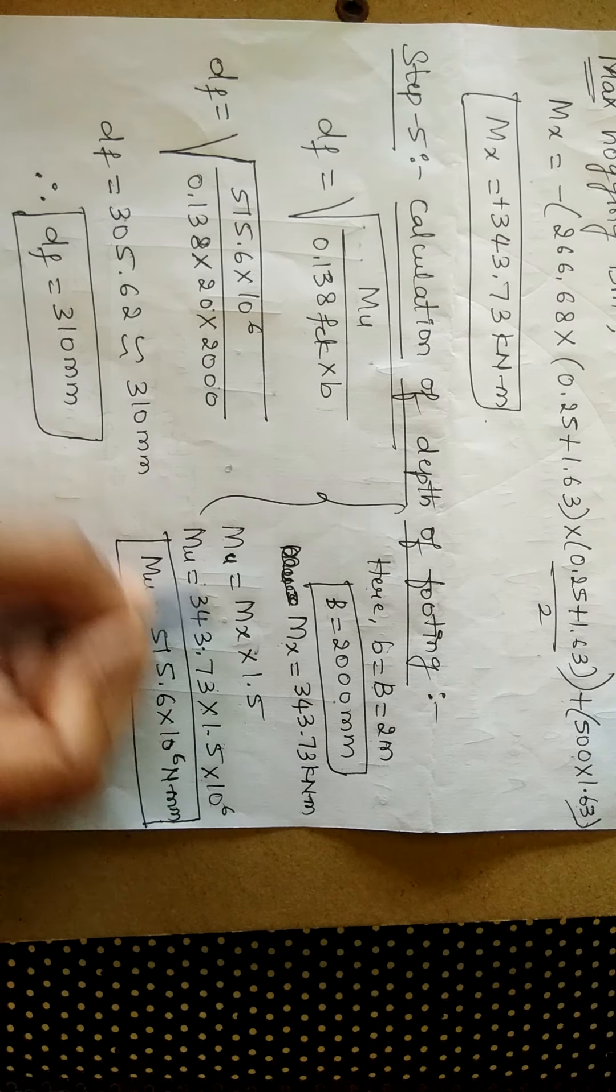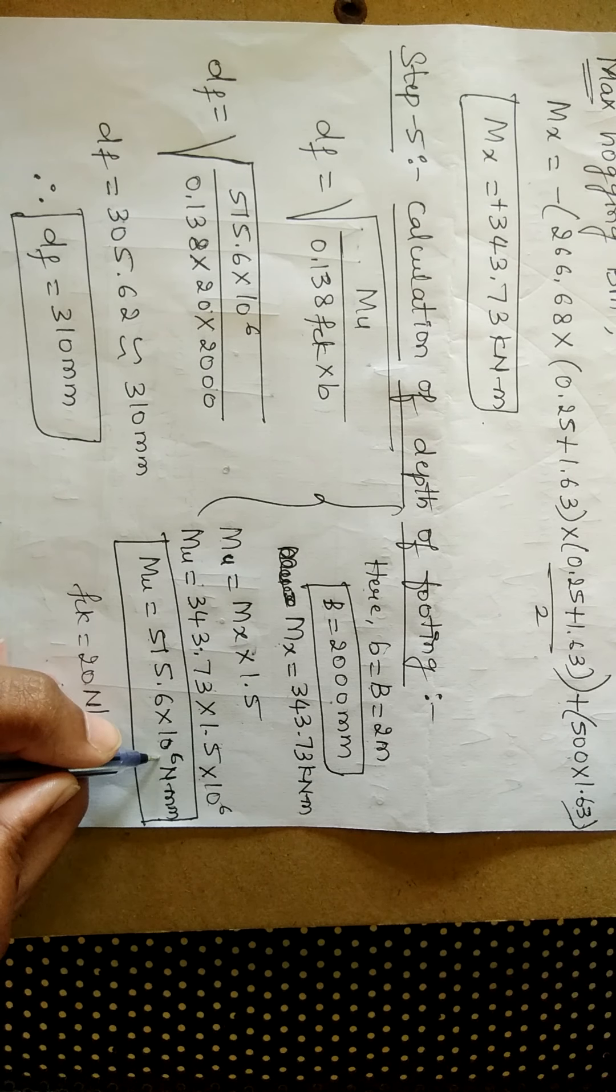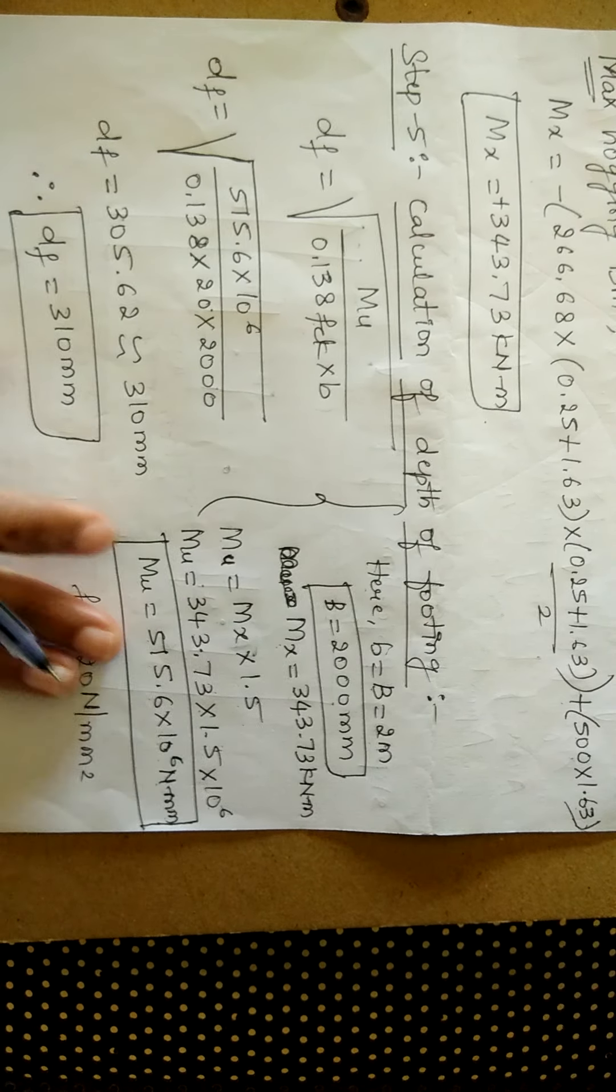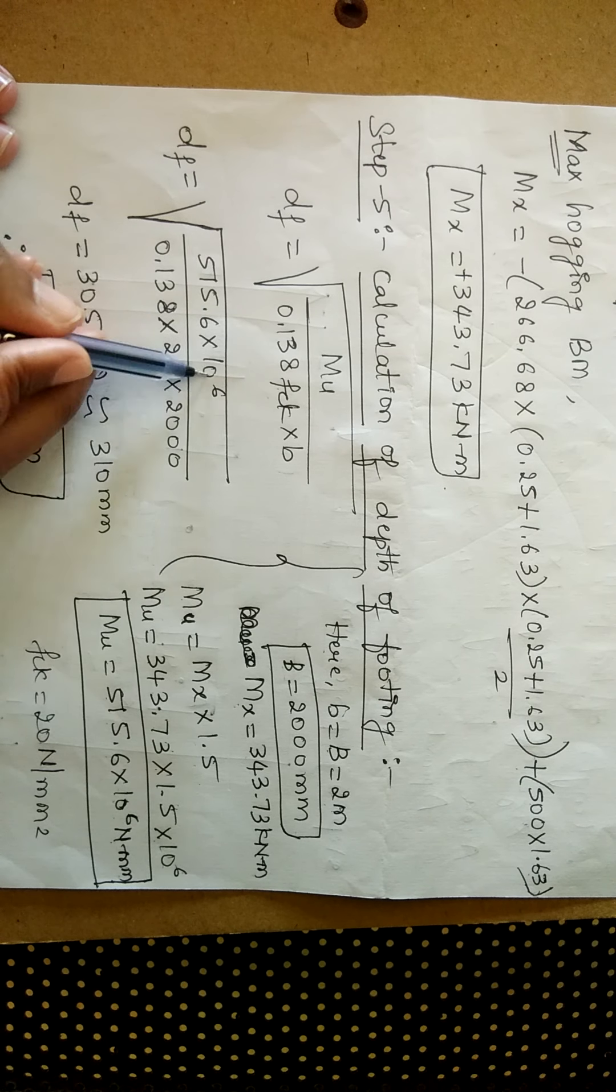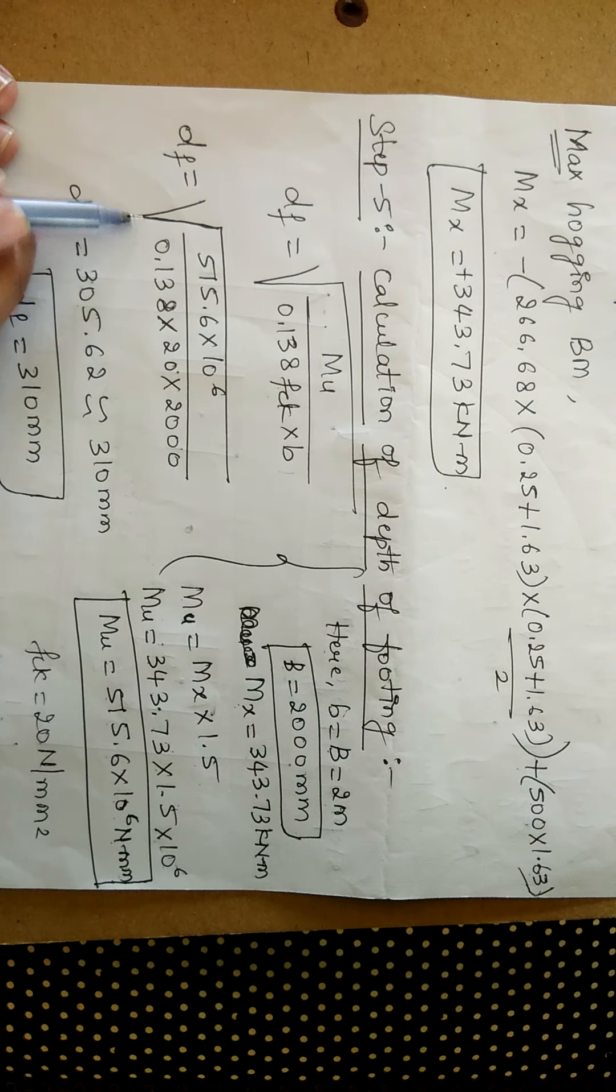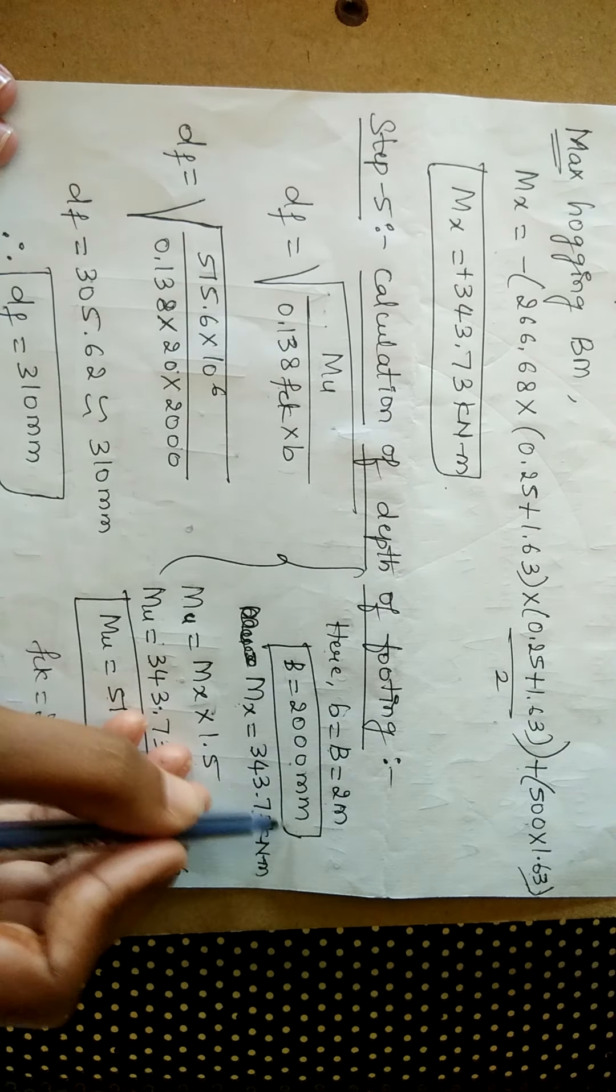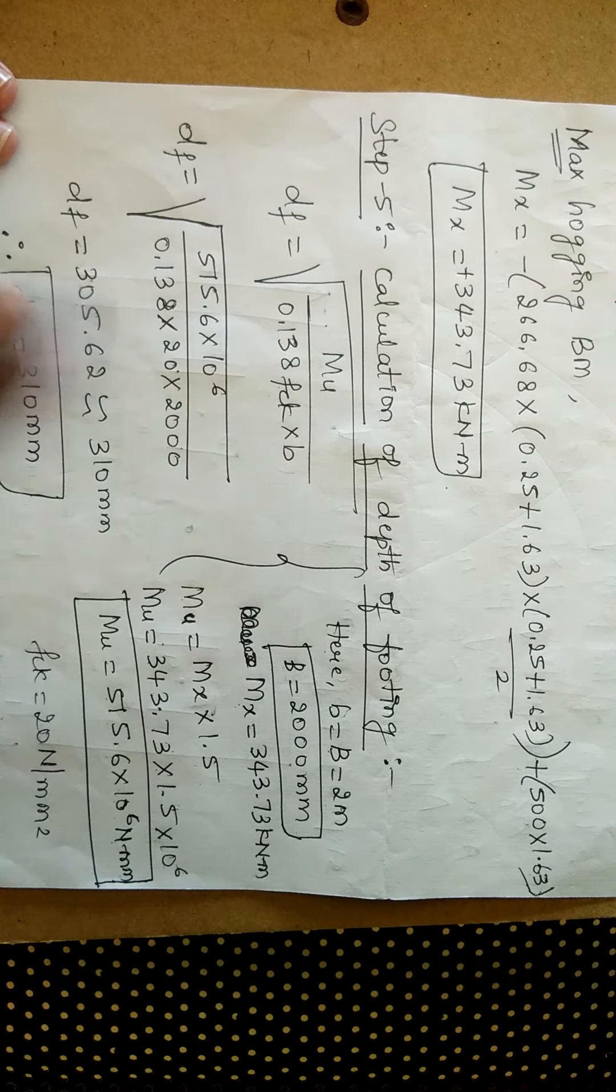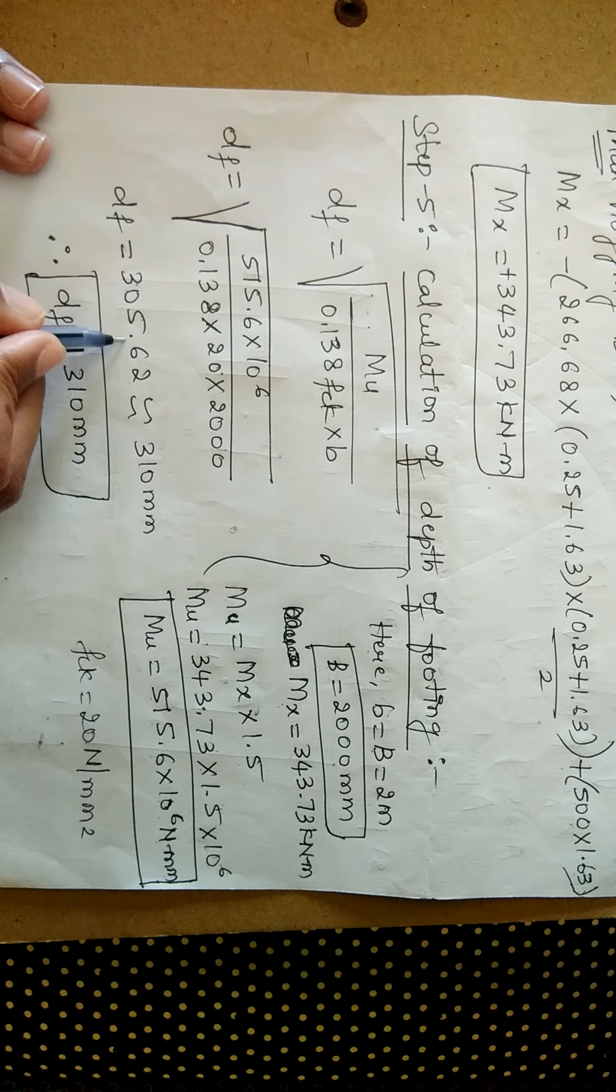On solving this, you will be getting 515.6 into 10 raised to 6, which is in terms of newton mm. So now, you substitute the value of mu what you have got, 515.6 into 10 raised to 6, that divided by 0.138 into fck is 20 into b is 2000. You simplify this along with the square root. On simplifying, you will be getting a value as 305.62.